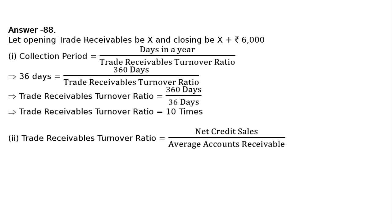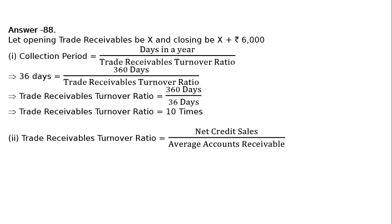Part 2. Trade receivables turnover ratio equals net credit sales divided by average accounts receivables. That is, 10 times equals Rs 4,00,000 net credit sales divided by average trade receivables. Hence, average trade receivables equals Rs 40,000.